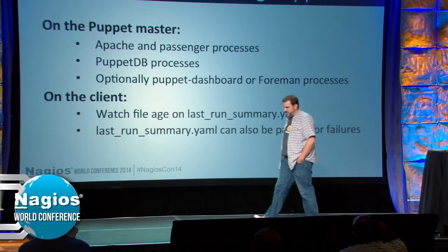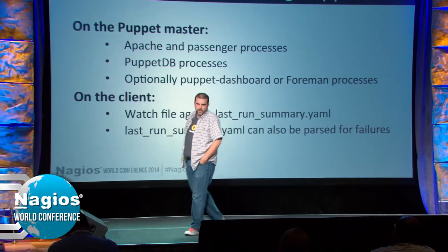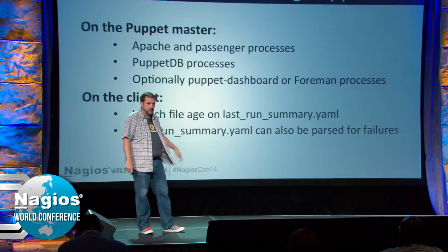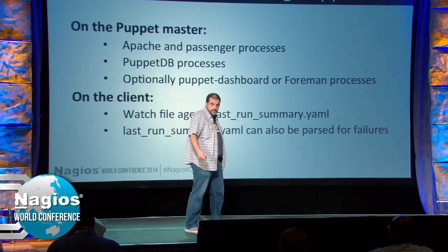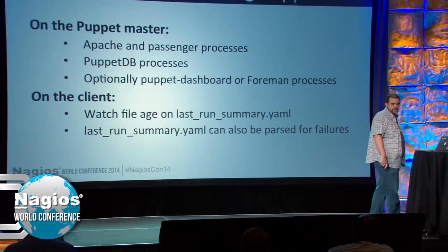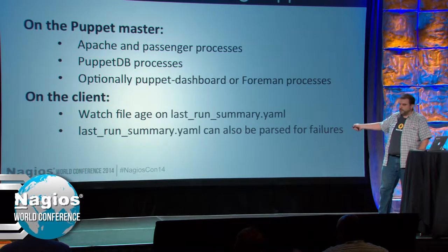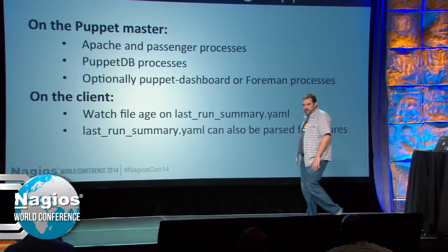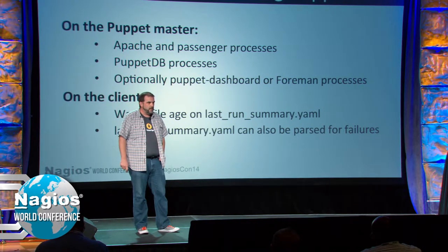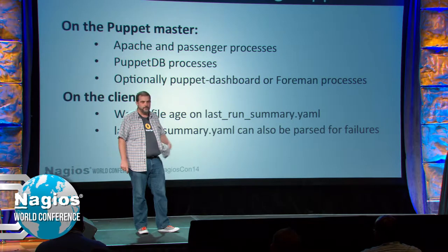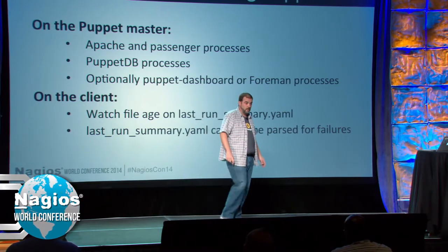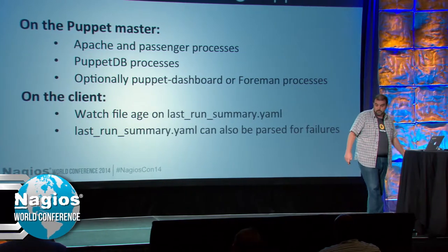A quick note on how to monitor Puppet itself. On the Puppet master: watch your Apache process, your PuppetDB process, and if you're running the Postgres backend, monitor Postgres. If you're running a frontend like Puppet Dashboard or Foreman, monitor that too. On the client, I watch the last-run-summary.yaml that lives in /var/lib/puppet/state and make sure it gets touched every half hour — that's the usual run interval. I don't parse it for failures; I think tools like Nagios log server are better for that.